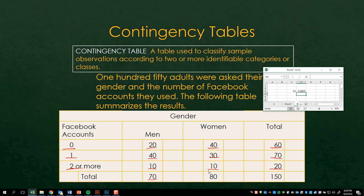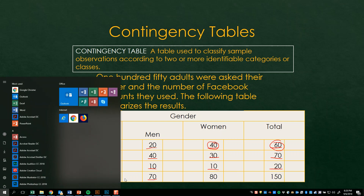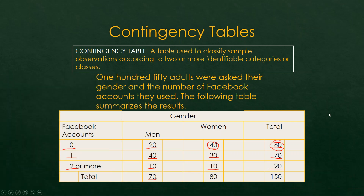Or you say, of individuals who have zero Facebook accounts, what is the probability that that individual is a woman? You take 40 and divide it by 60, which is 0.40 divided by 60, which is two thirds. So it's 0.67 — the probability that, among individuals who have zero Facebook accounts, that individual is a woman.